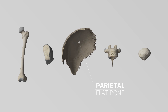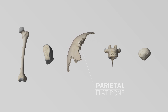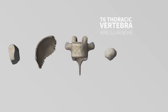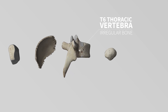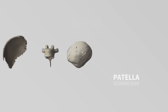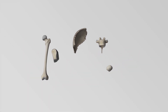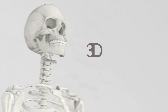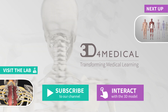Flat bones are broad and sheet-like and include bones of the skull that surround the brain, such as the parietal bones. Irregular bones are groups of bones that do not fit into the long, short, or flat groups, such as the T6 thoracic vertebra. Sesamoid bones are a special group of bones that are found within tendons, such as the patella.